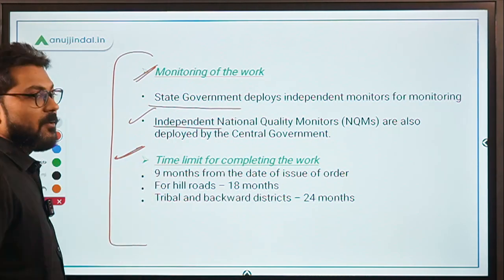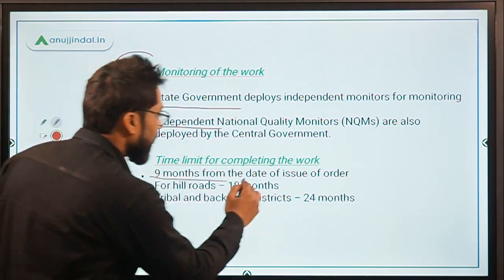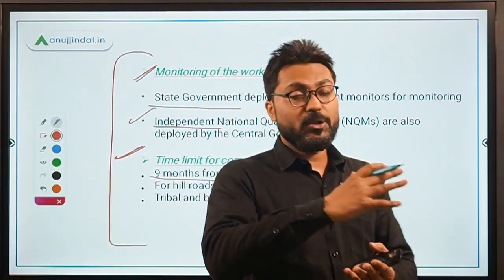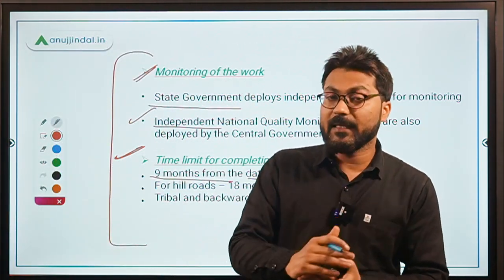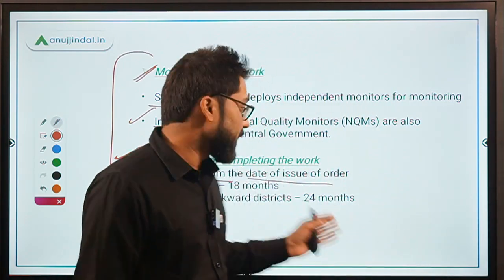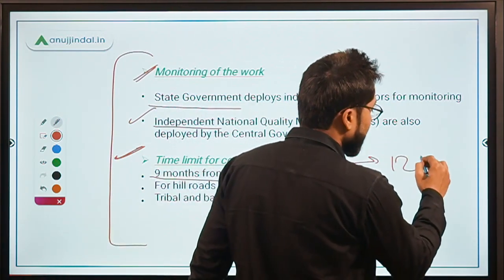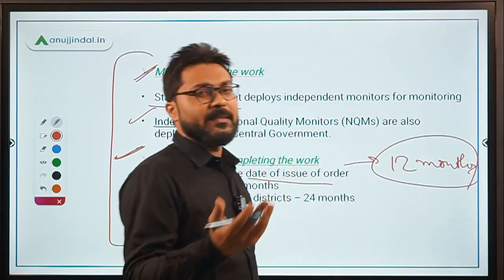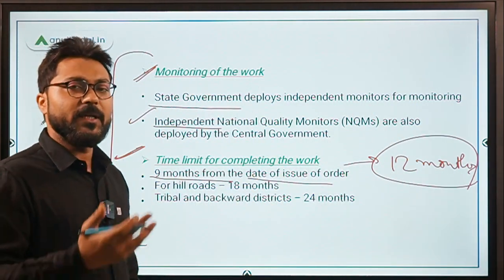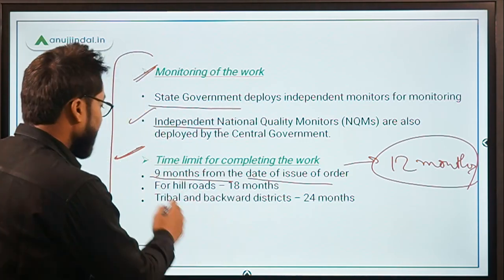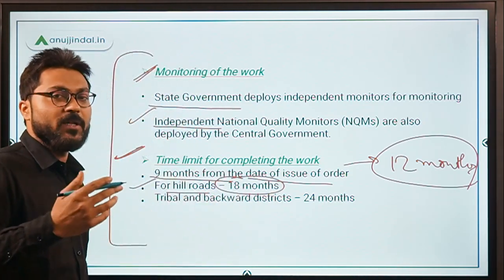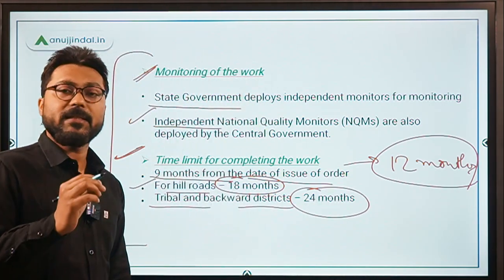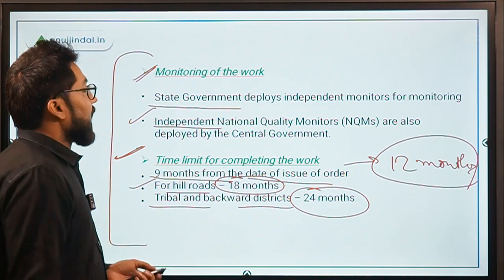Regarding the time limit for completion of work: nine months from the date of issue of the order. This can be extended up to 12 months in exceptional cases, such as heavy monsoon rains. For hill roads, the time limit is 18 months, while for tribal and backward districts it is 24 months.